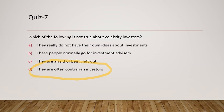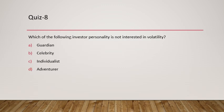The final question asks: which of the following investor personalities is not interested in volatility — they generally tend to avoid it? Guardian investors are the investors who are not very keen on volatility. They just don't like volatility because they want to protect their wealth.